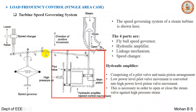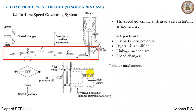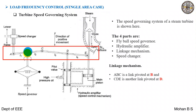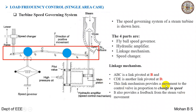Based on the actions on the linkage mechanism, the high pressure rod would enter or pass out. Based on that, the main piston would act and the steam flow is varied. The linkage mechanism has points A, B, and C — where B is pivoted — and then C, D, and E — where D is pivoted. This linkage mechanism provides movement to the control valve in proportion to the change in speed, and also provides feedback from the steam valve movement.